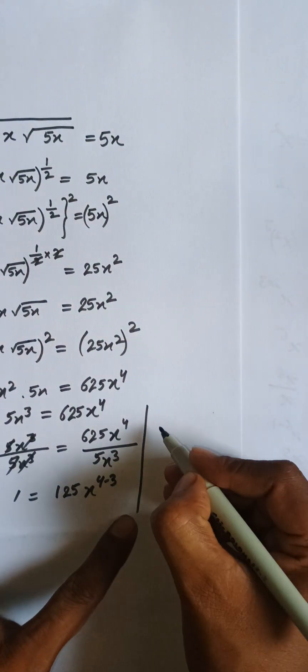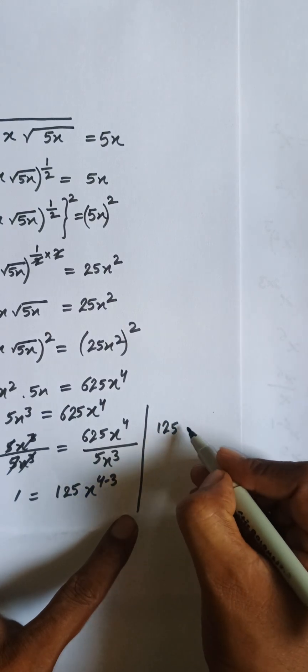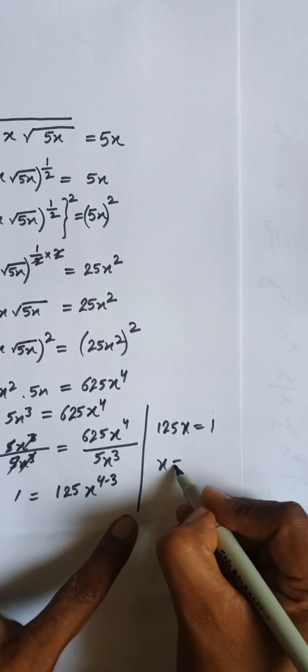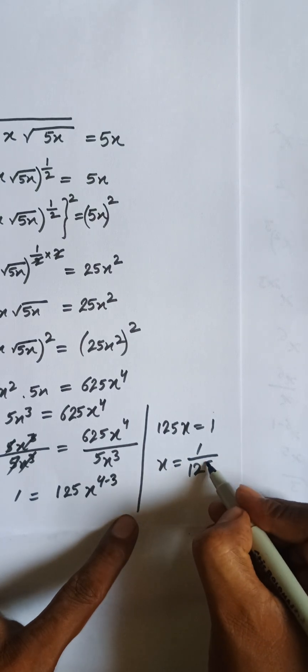125x is equal to 1, therefore x equals 1/125 is the solution of this problem.